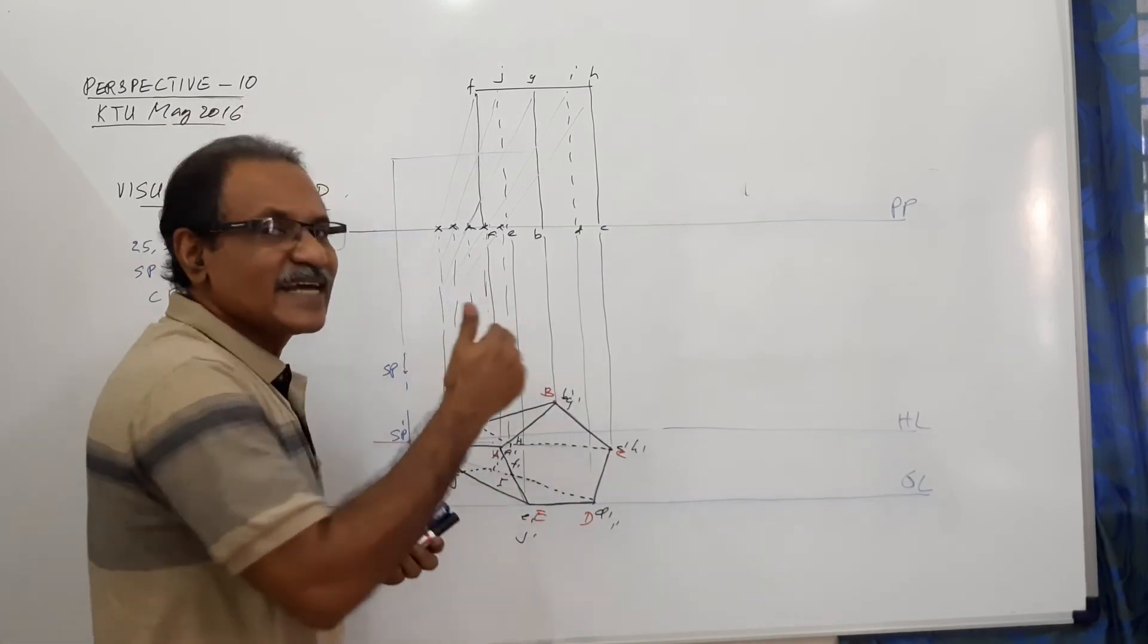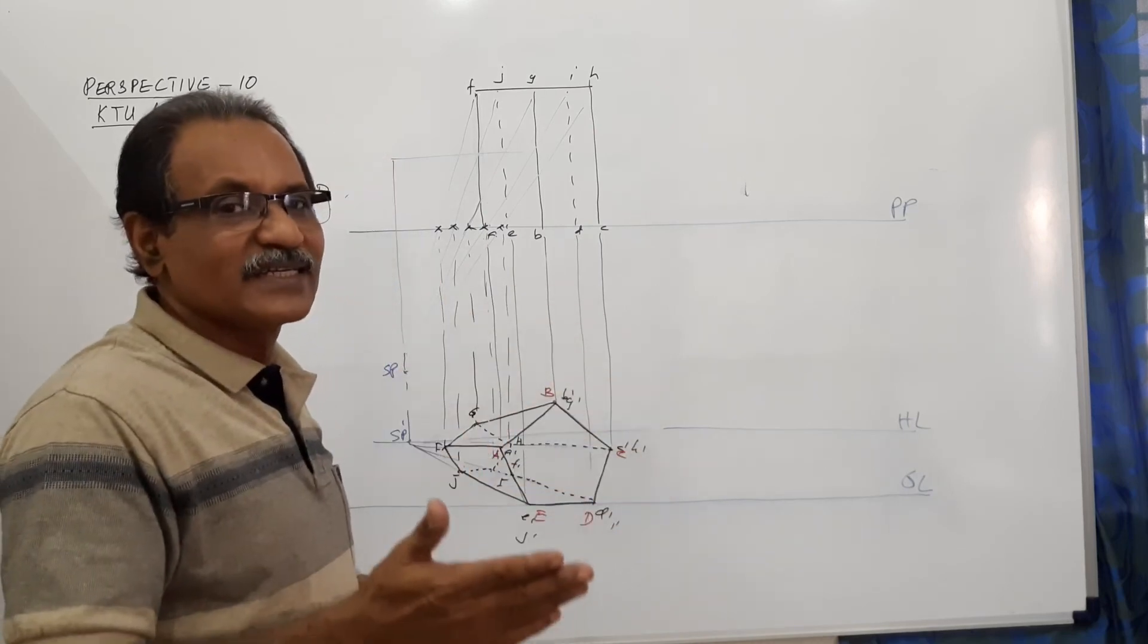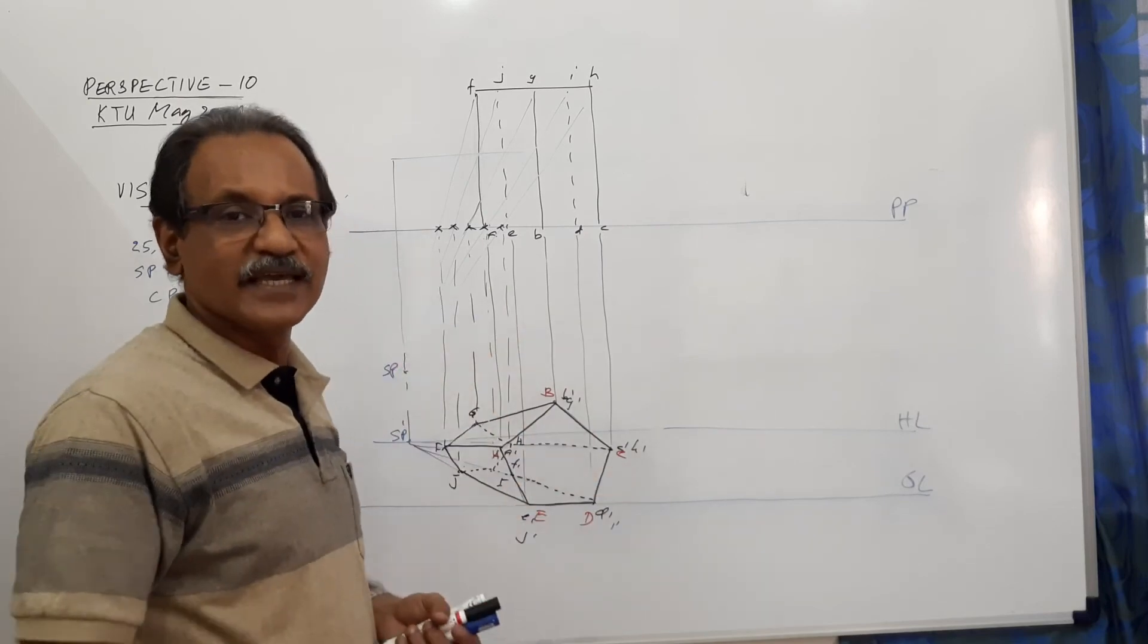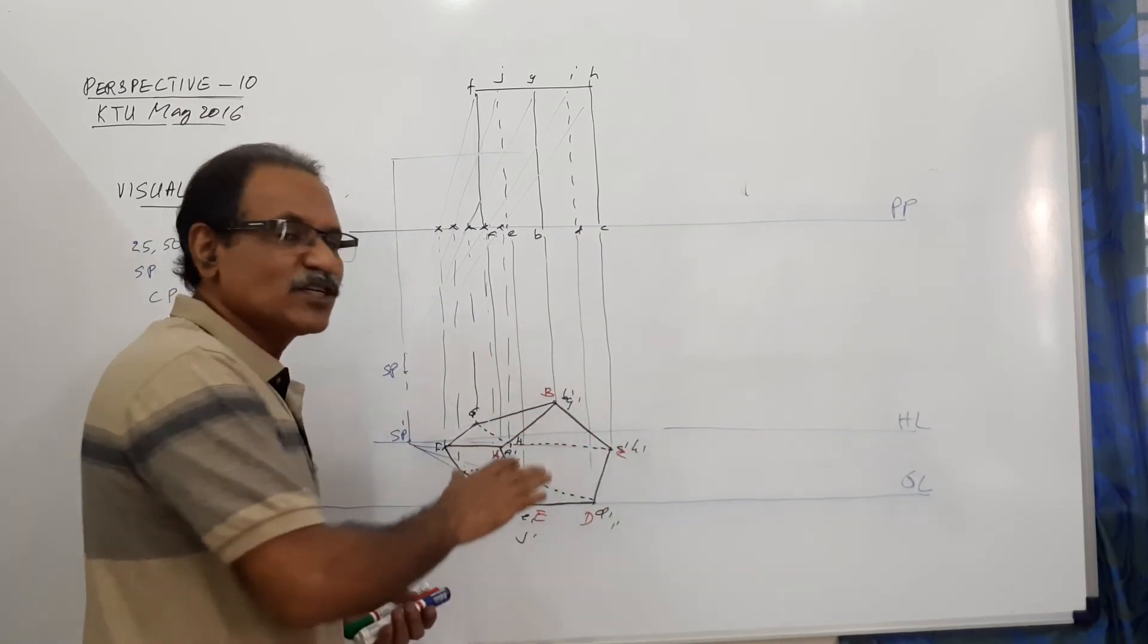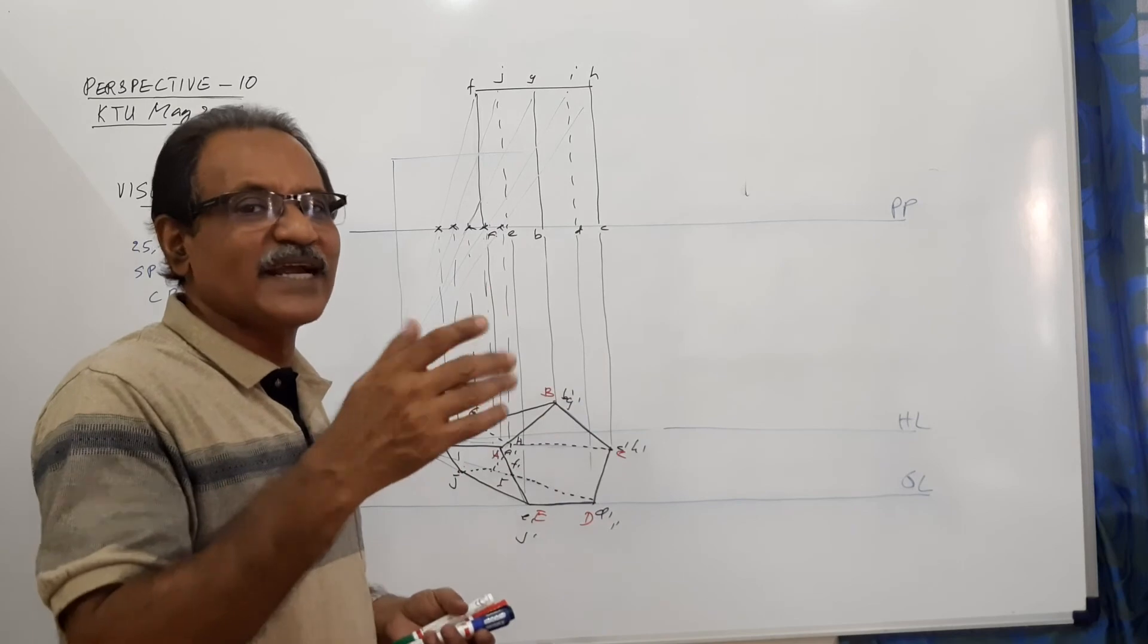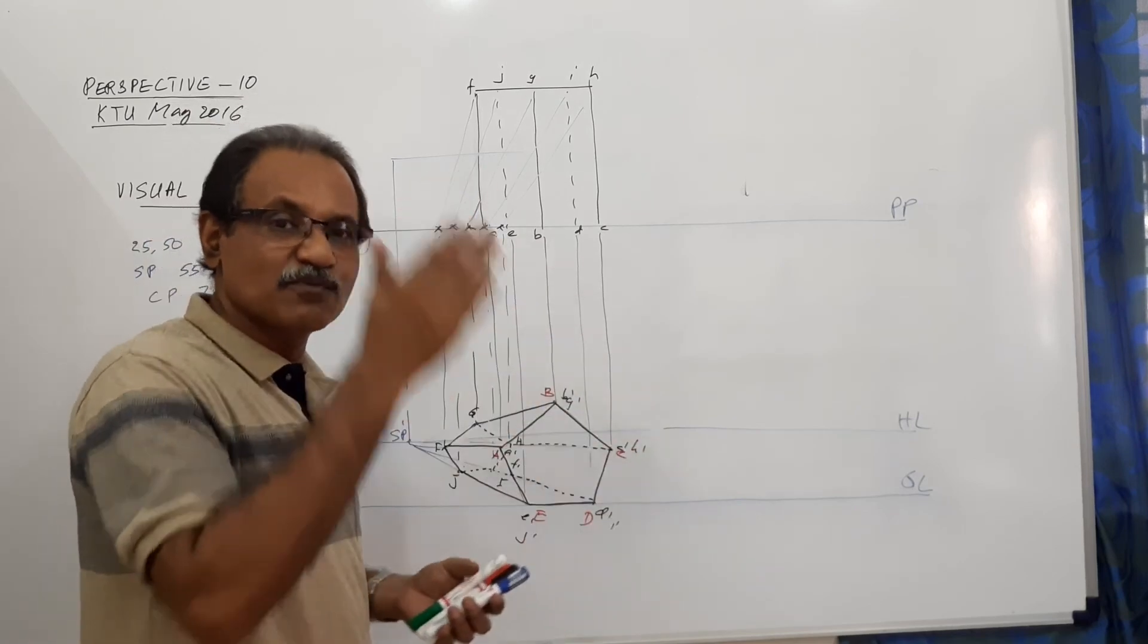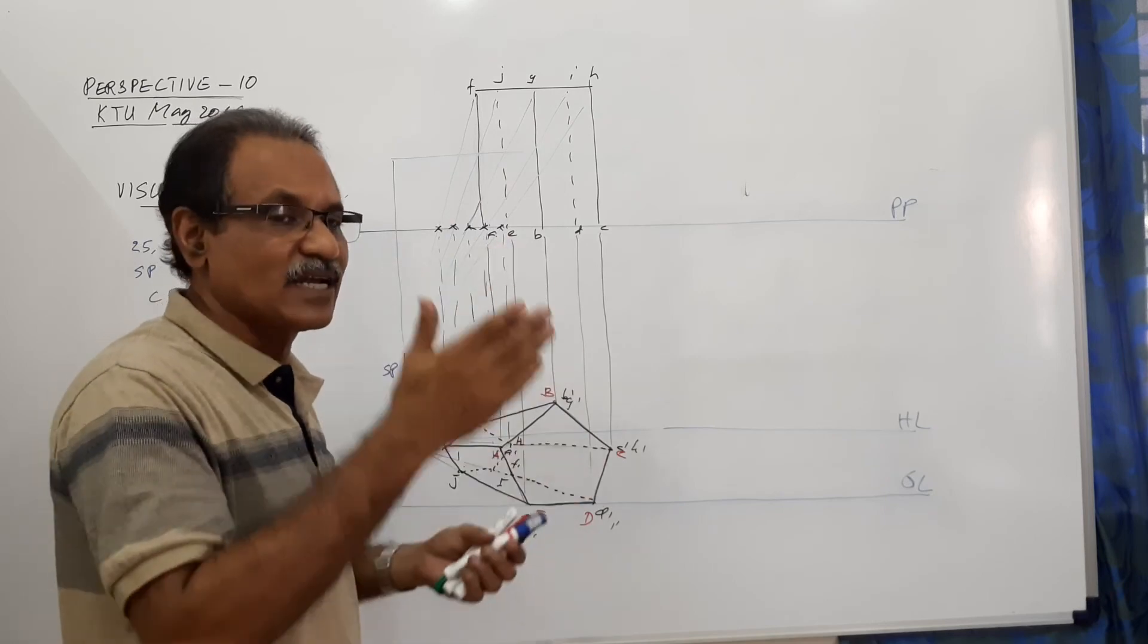Here, since that front face is touching the picture plane, that pentagon doesn't come. The elevation itself becomes capital A, B, C, D, E. When it is pulled back, in addition to the elevation, which is very light A dash, B dash, C dash, D dash, you will have capital A, B, C, D, E, which represents the perspective view of the front pentagonal face.